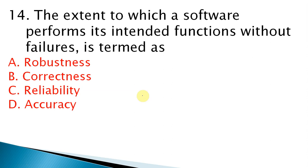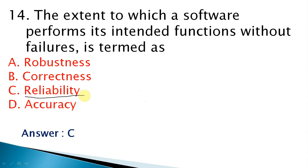The extent to which a software performs its intended functions without failures is called reliability. When software consistently does what it was built to do, without failing, that is what we call reliability.